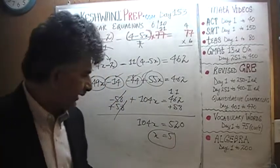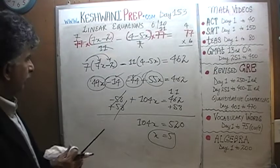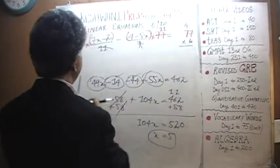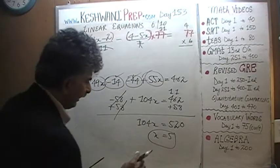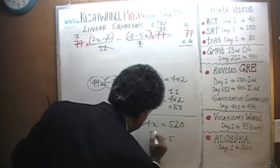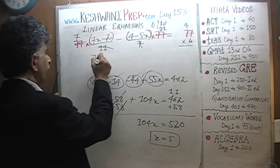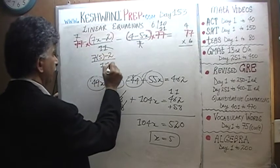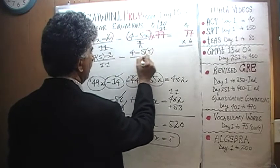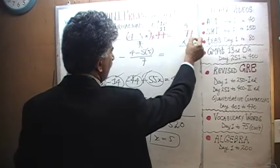We need to verify that answer — let's verify it right here. We are claiming that x equals 5. So: 7 times 5 minus 2 over 11, minus 4 minus 5 times 5 over 7. This has to equal the quantity that was given to us, which was 6. That's what we have to show.